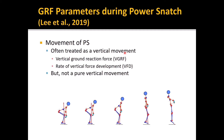The power snatch is often treated as a vertical movement, so the vertical components — such as instantaneous peak vertical ground reaction force and the rate of vertical force development — have been primarily analyzed in previous studies. But the power snatch is not a pure vertical movement; horizontal movement is also observed during the power snatch.